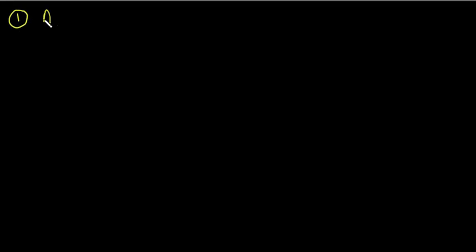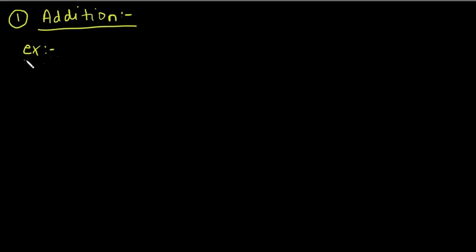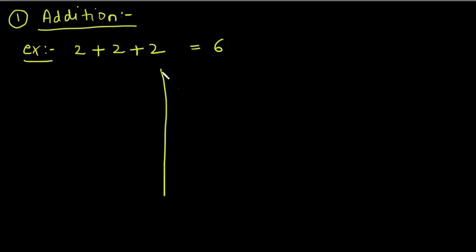First I will take the addition operation. So as an example, let's take 2 plus 2 plus 2. From basic mathematics, we all know that it is 6. But let's go and see on the number line how we can get this.